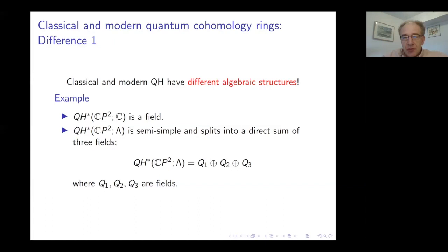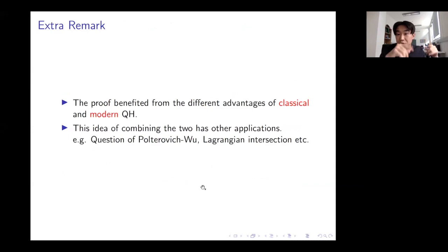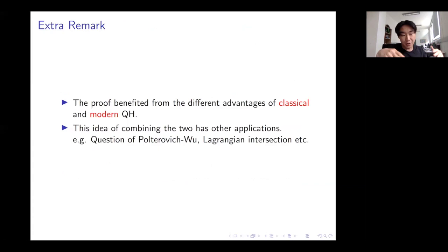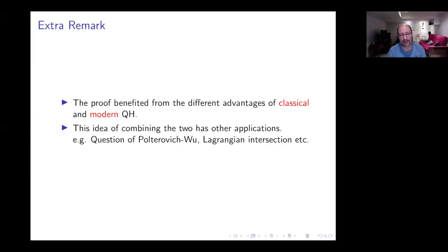You mentioned an application to Lagrangian intersection. Basically there are two Lagrangians that are super-heavy with respect to the two quasi-states, and the result states that if a given Lagrangian does not intersect either of those Lagrangians, it should have trivial Floer homology, because otherwise it would have to be super-heavy with respect to one of the Entov–Polterovich type symplectic quasi-states.